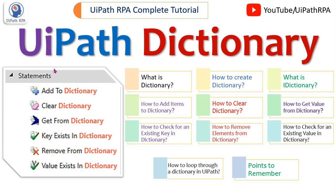We will also learn about what is IDictionary, how to add items to dictionary, how to clear the dictionary, how to get the value from the dictionary, how to check for an existing key in a dictionary, how to remove elements from the dictionary, how to check for an existing value in dictionary, and how to loop through a dictionary in UiPath.